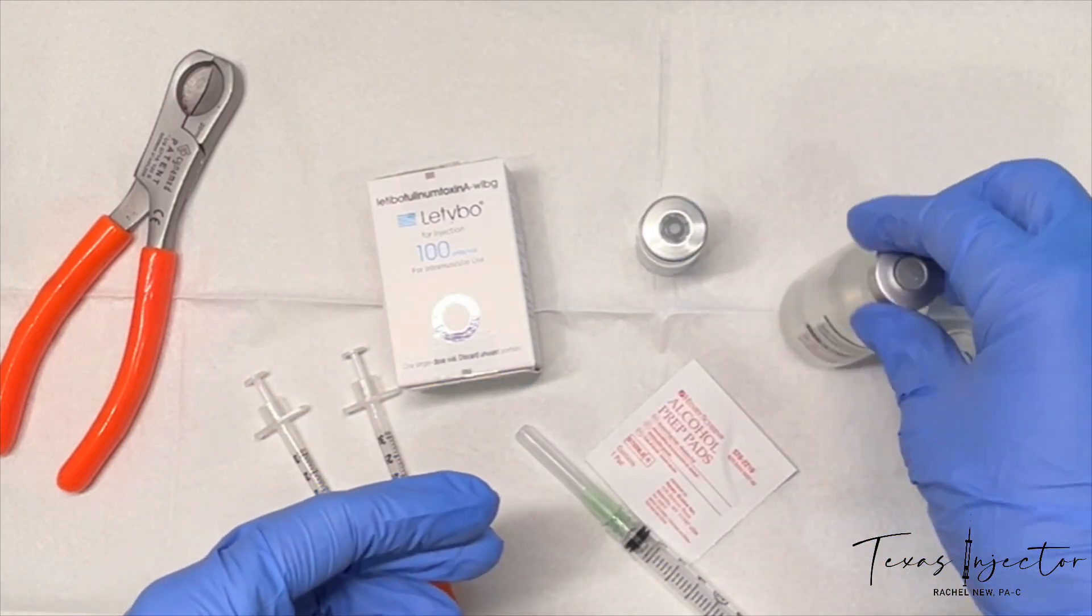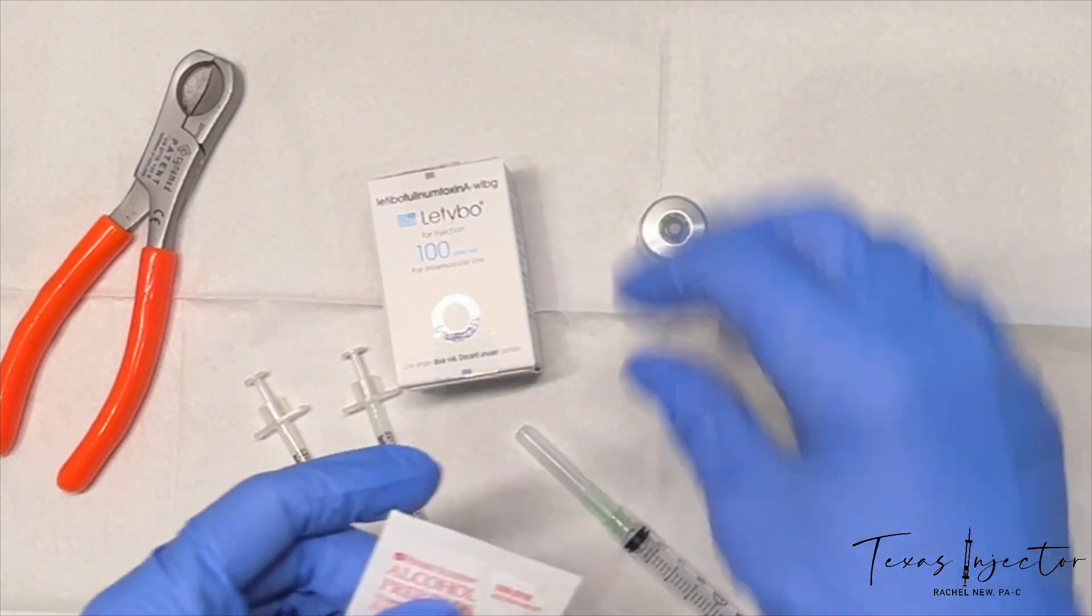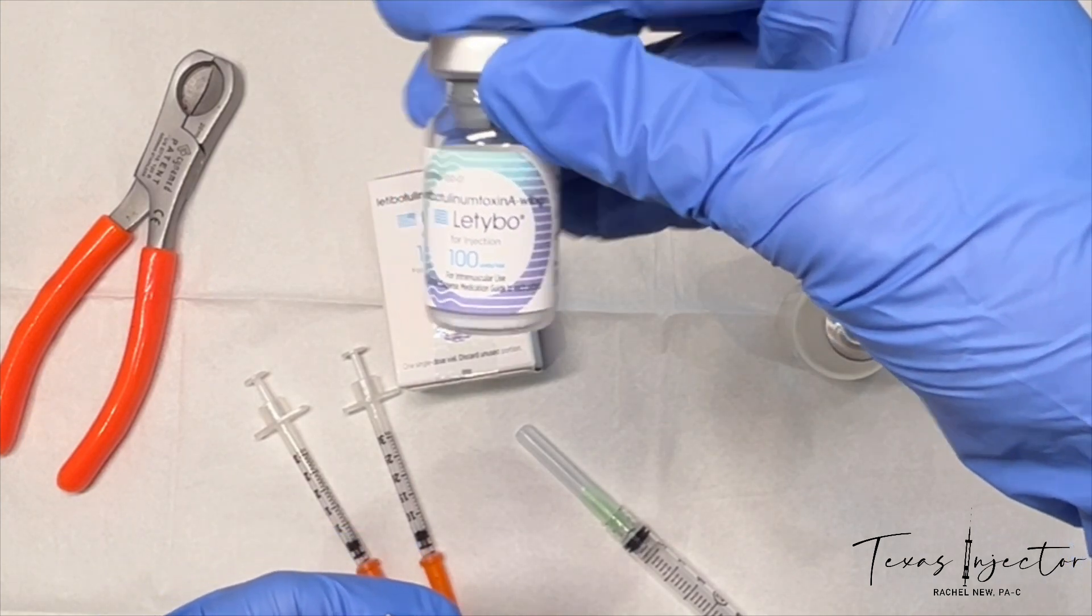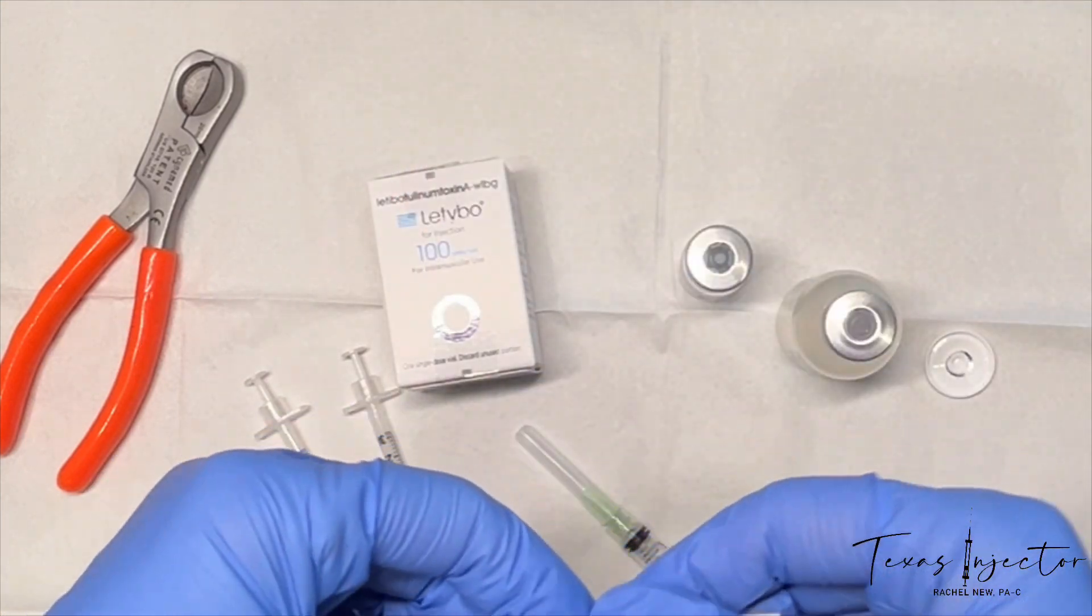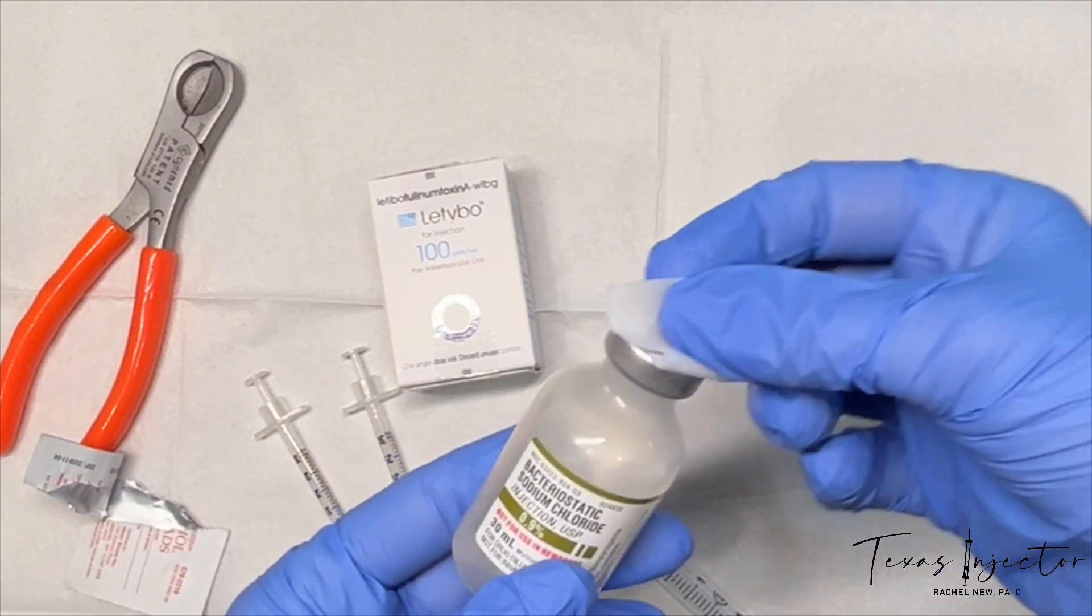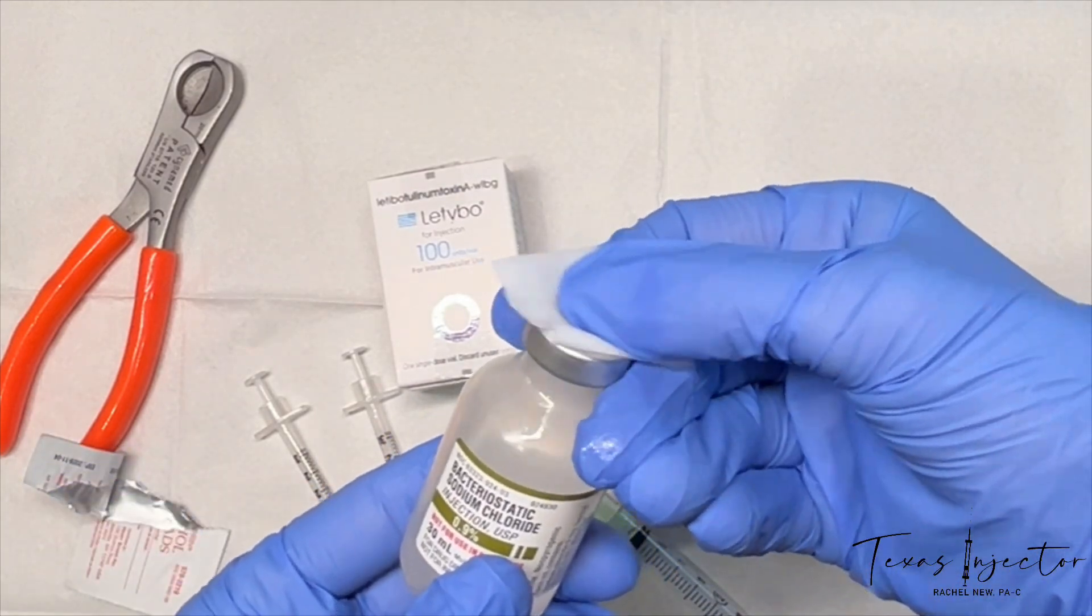Blending for Latibo is 2.5 ml for a 100-unit vial and 1.25 ml for a 50-unit vial. We're going to start by wiping down the bacteriostatic sodium chloride.